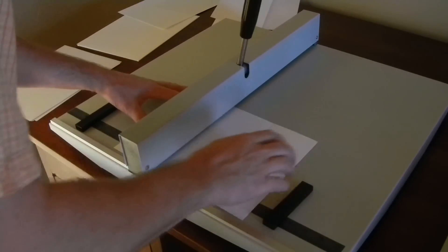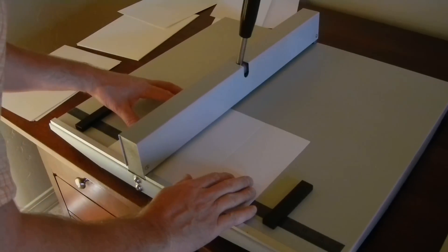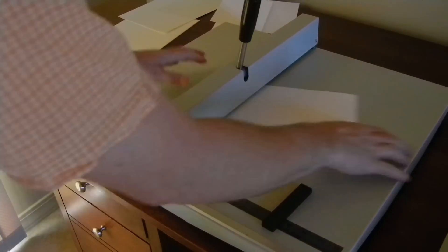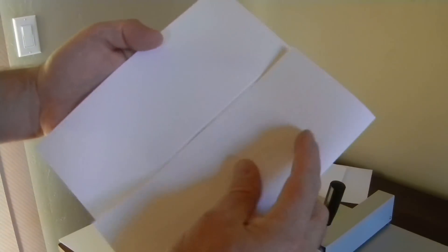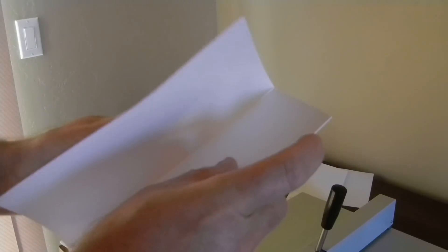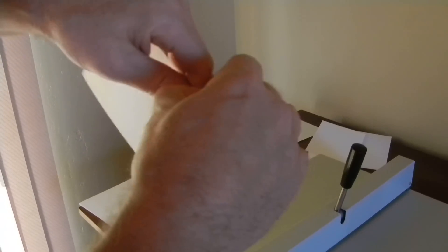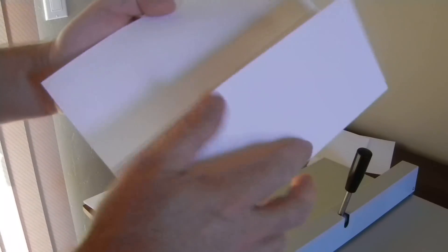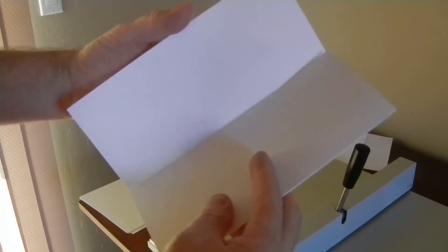Just one side. And then the other side. You can see the two creases. This would be for a tri-fold. Just like so. Get your next tri-fold.